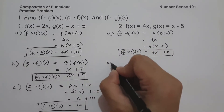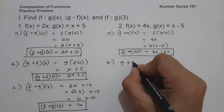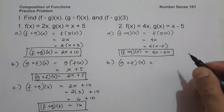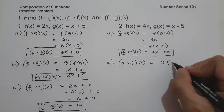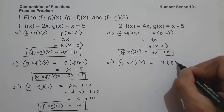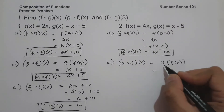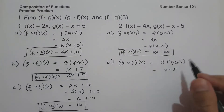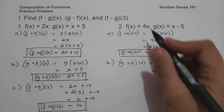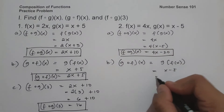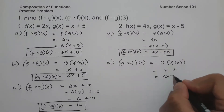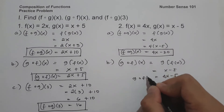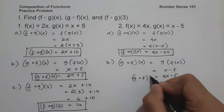On letter b, let us have g circle of f of x, and that is g of f of x. g is x minus 5, and this time x is f of x, which is 4x. So we have 4x minus 5, and this will be g circle of f of x.